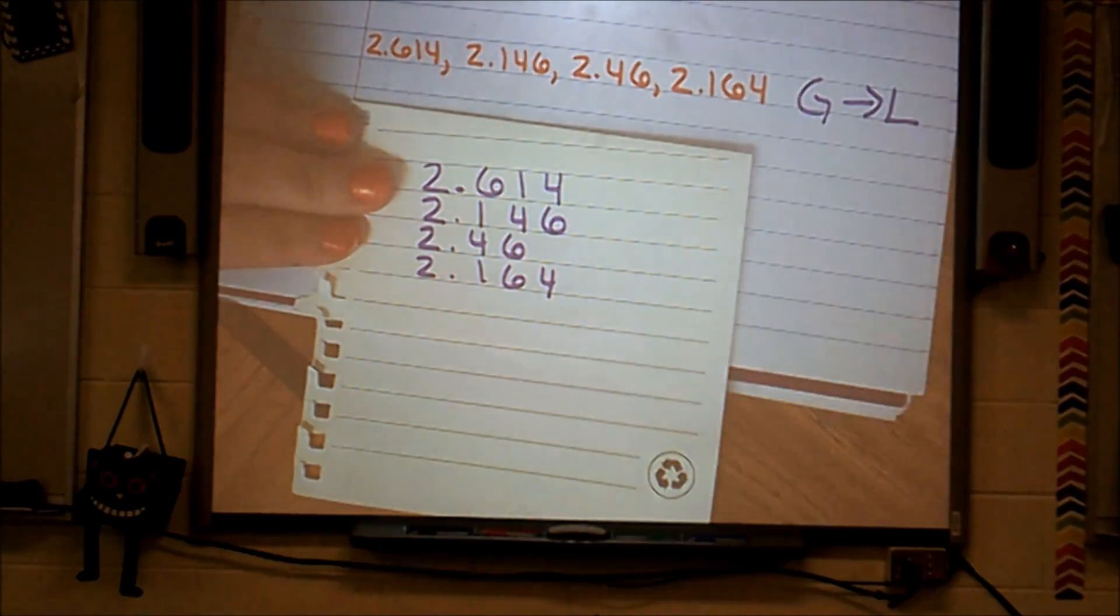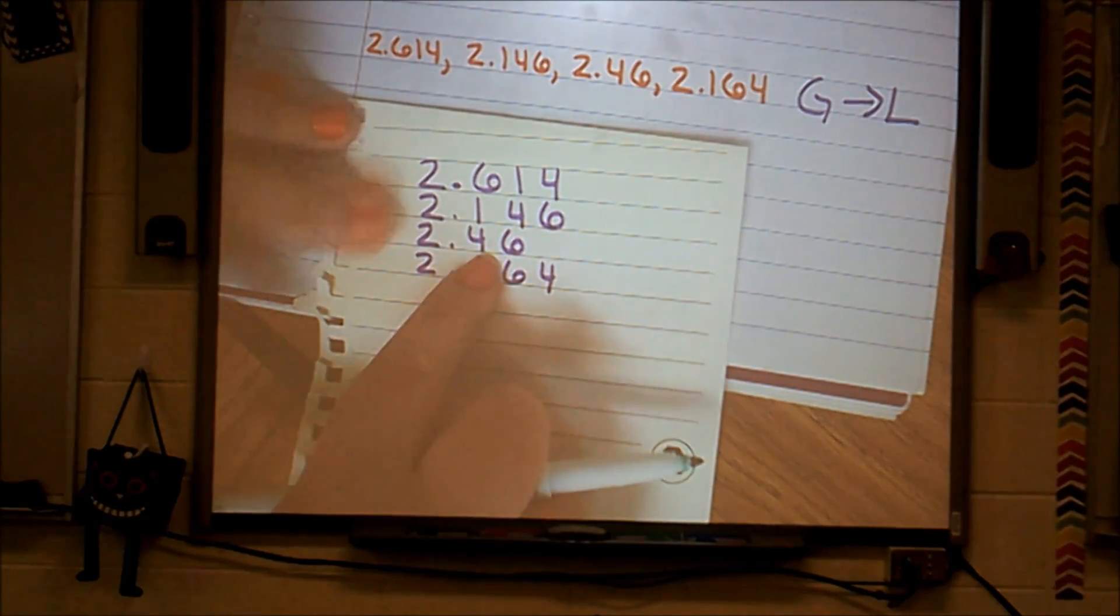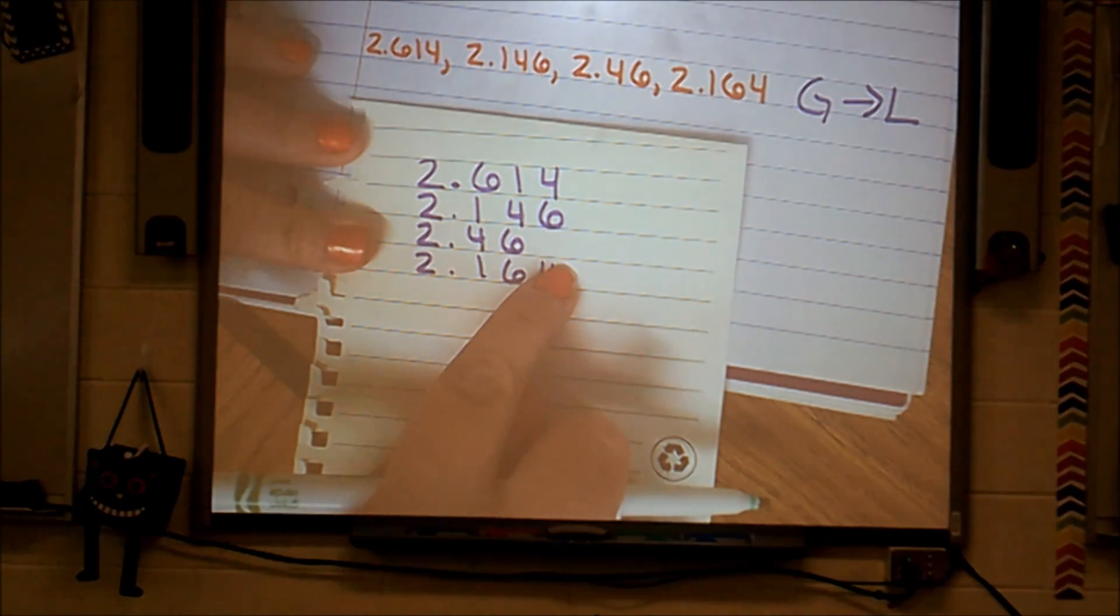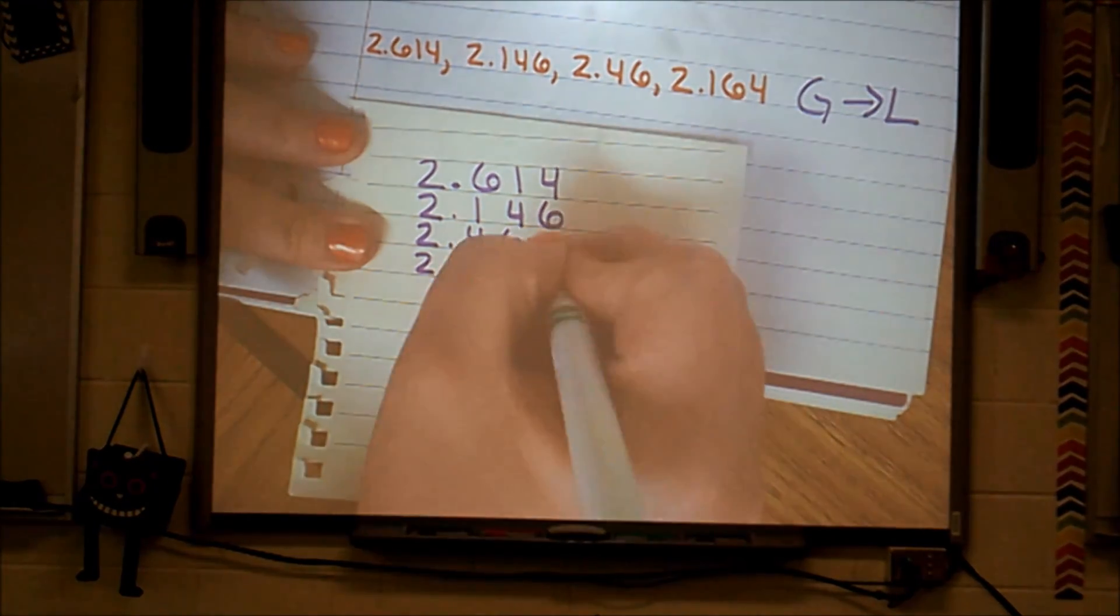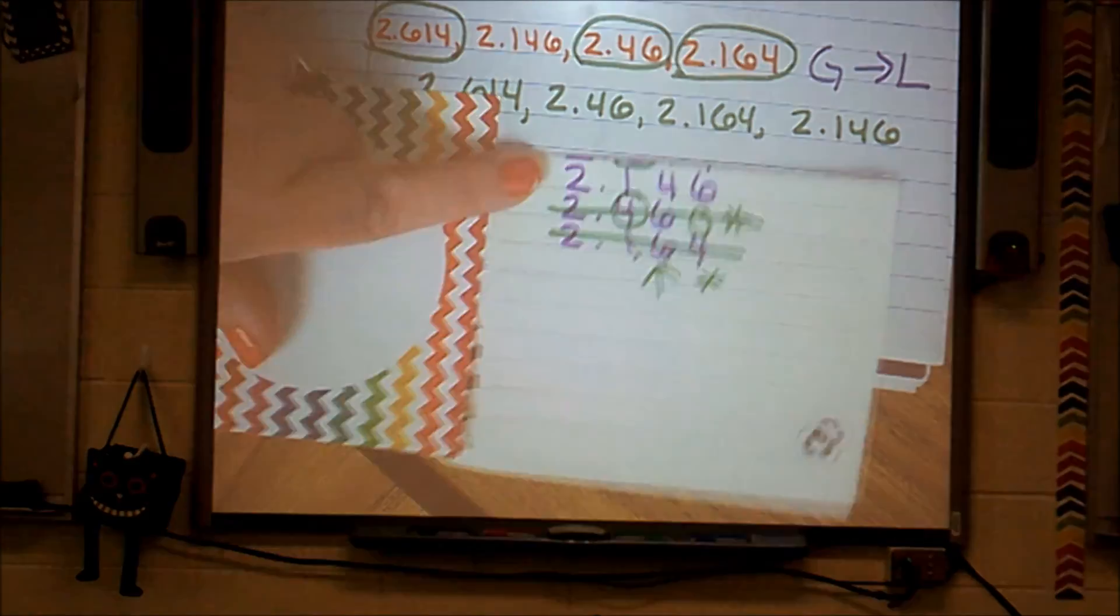So here's my list. Now I hope that when you made your list, you noticed that this number here, 2 and 46 hundredths, does not have the same number of digits that the other numbers have. So I'm going to fill it in with a zero because I can. Hooray!